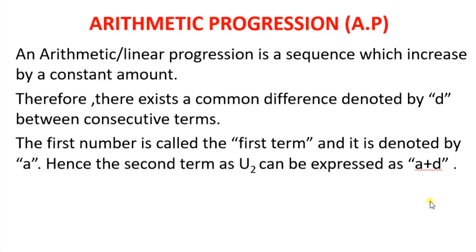Let's turn our attention to the first part of a sequence we call the arithmetic progression or AP. It is a sequence which increases by a constant value or amount. We can see that for any sequence to be established, there must be a constant value which increases per number. Therefore, there exists a common difference denoted by D between the consecutive terms. The first number is what you call the first term and it is denoted by A, and the second term U2 can be expressed as A plus D.